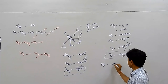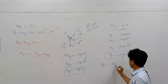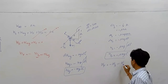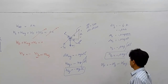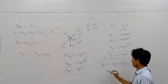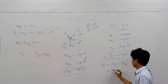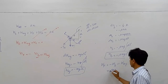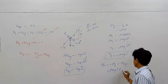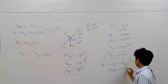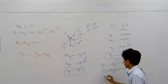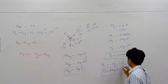Work done by capital F is the negative of work done by friction plus the negative of work done by mg. Since both are already negative, work done by F equals μmgL plus mgH.